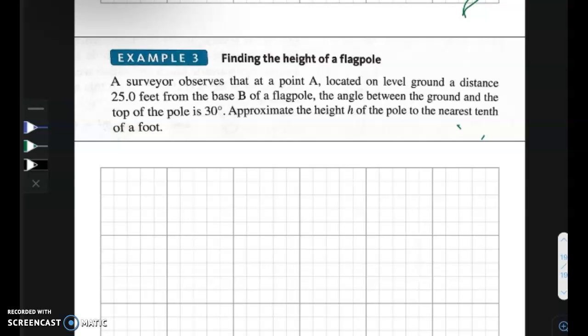So the surveyor is at point A. We're going to draw a diagram. I'm going to draw point A, and that is on ground level. So this is the ground.